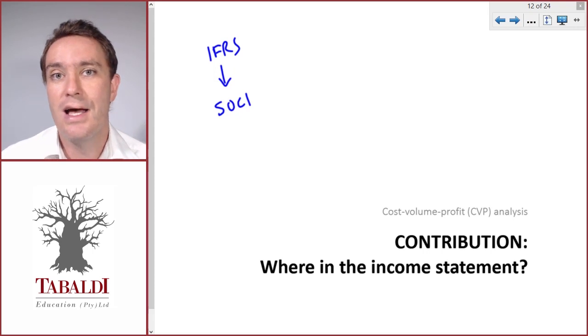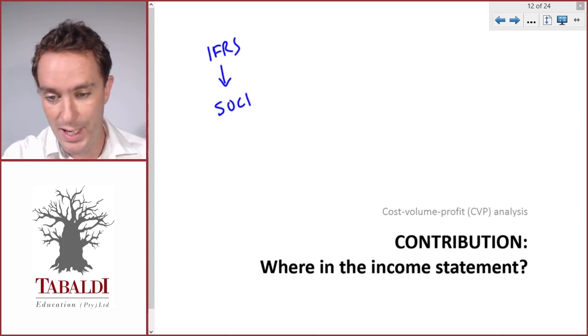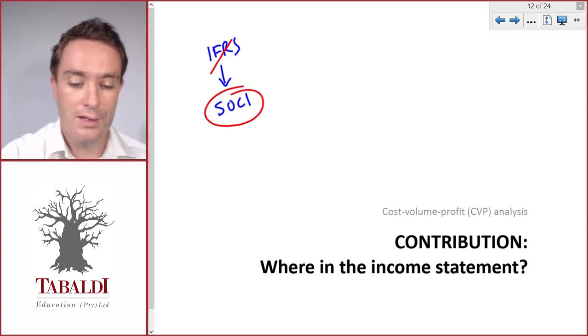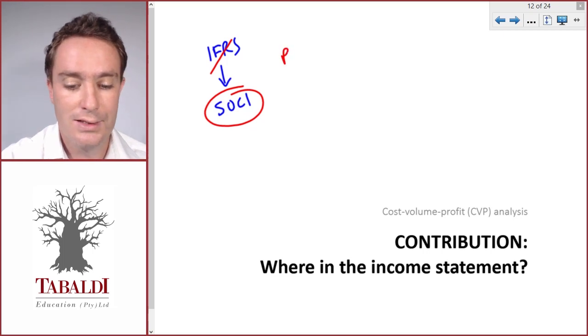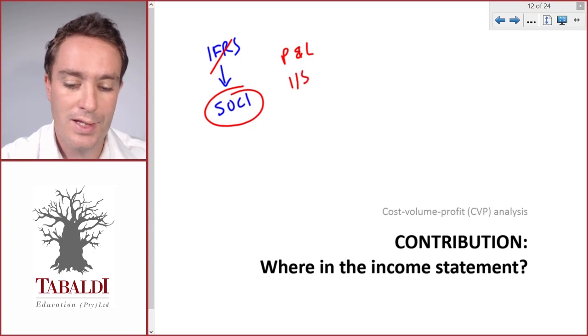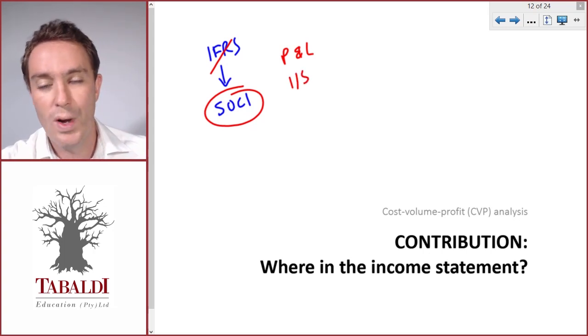Costs are classified by nature, so it's split between manufacturing and non-manufacturing costs. But luckily, for our purposes in management accounting, we don't have any rules and we can call the Statement of Comprehensive Income anything we like - the Statement of Profit and Loss, the P&L Statement, or simply the Income Statement. Let's just stick to income statement.